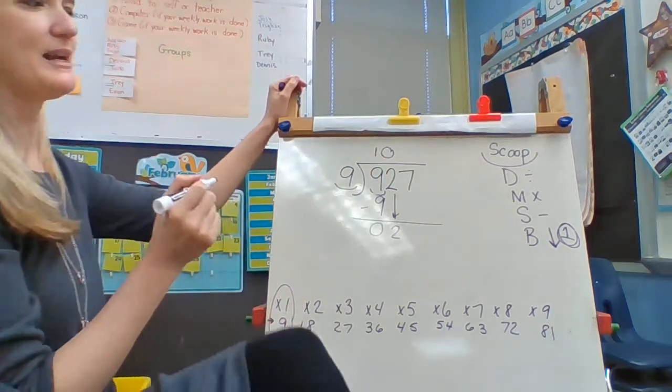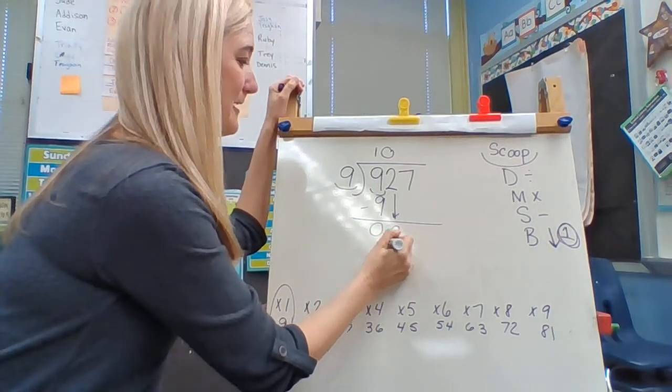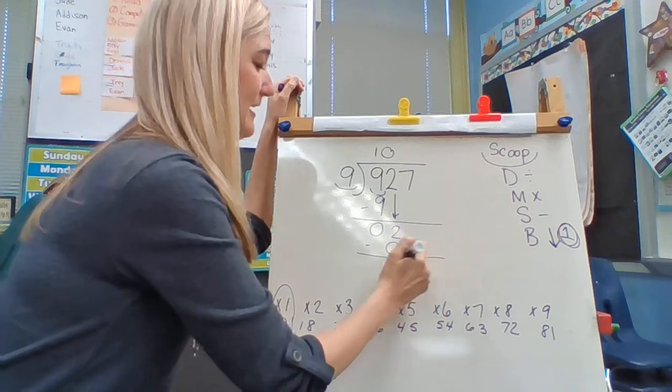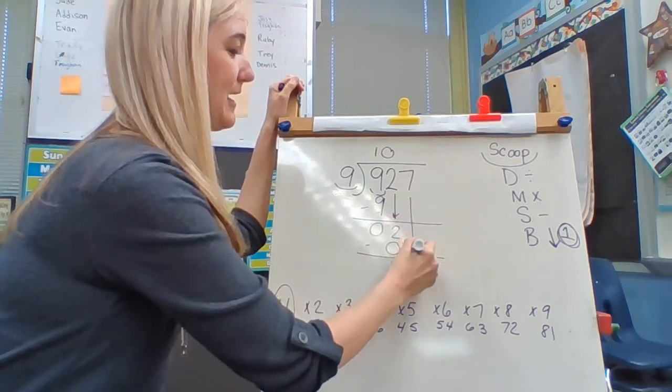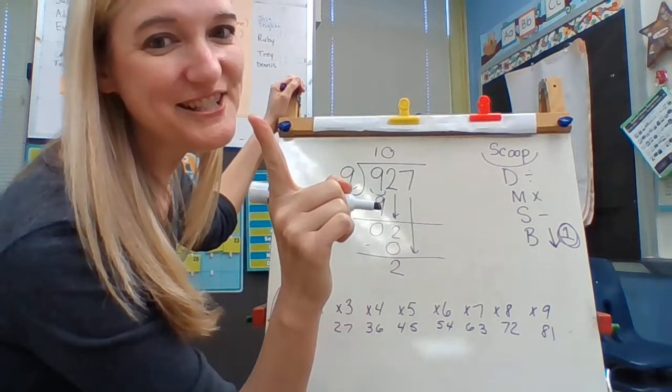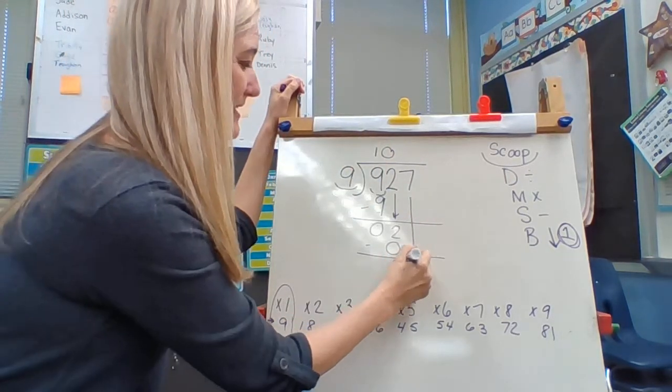0 times 9 is 0. We subtract. 2 minus 0 is 2. And bring down one digit: 7.